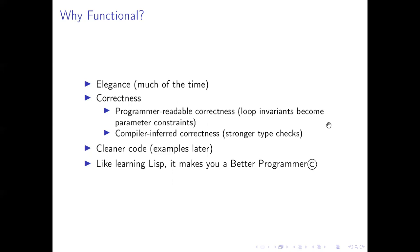Compilers can infer correctness through stronger type checks. So if you have a plus, for example, you know that there are numbers being added. Compilers can use that to infer something about what you're trying to do and see that you're not adding a string using a plus. Also, I think it just makes you a better programmer because you add another string to your abilities.